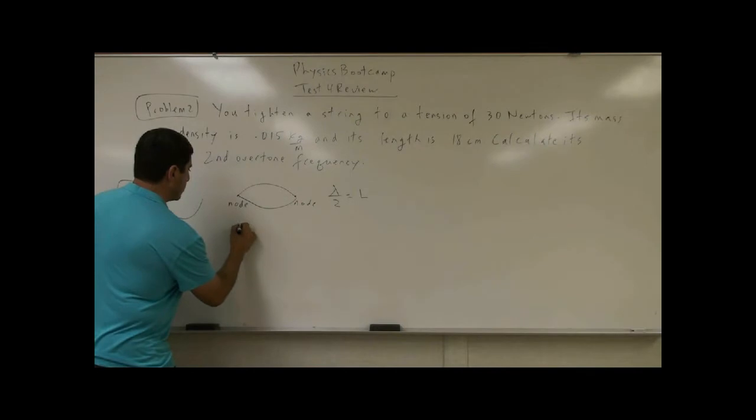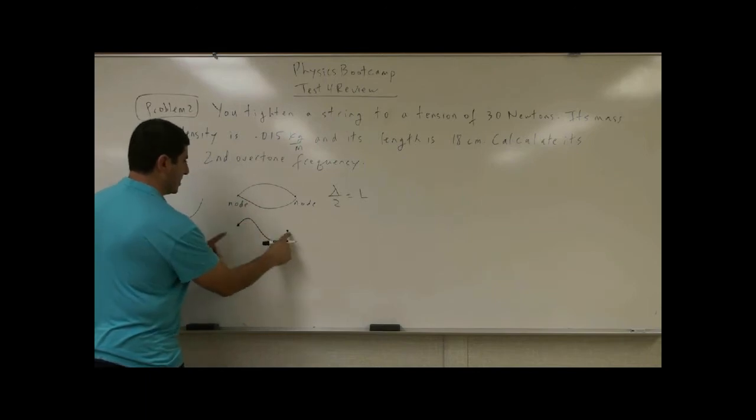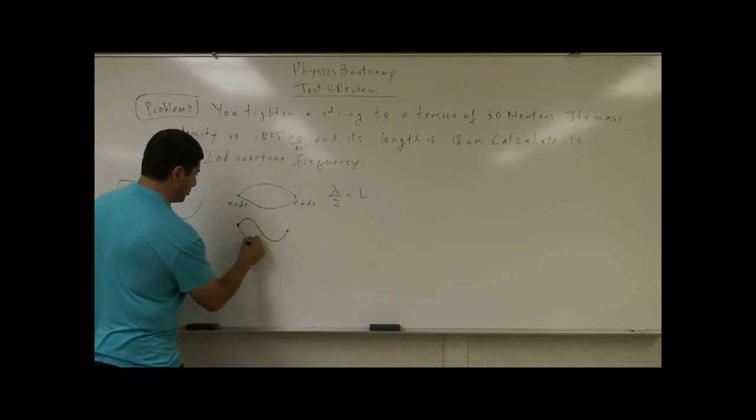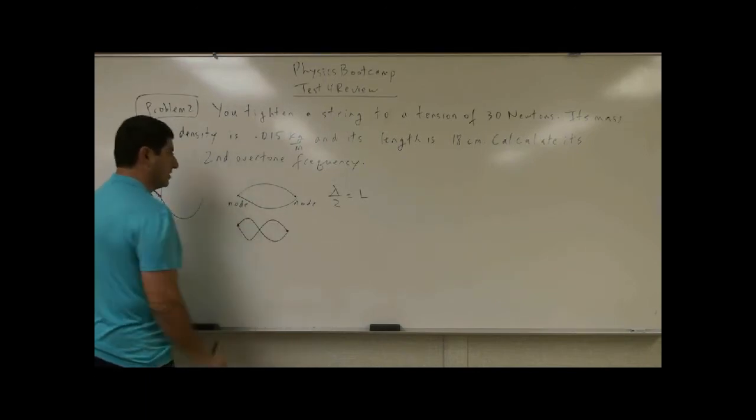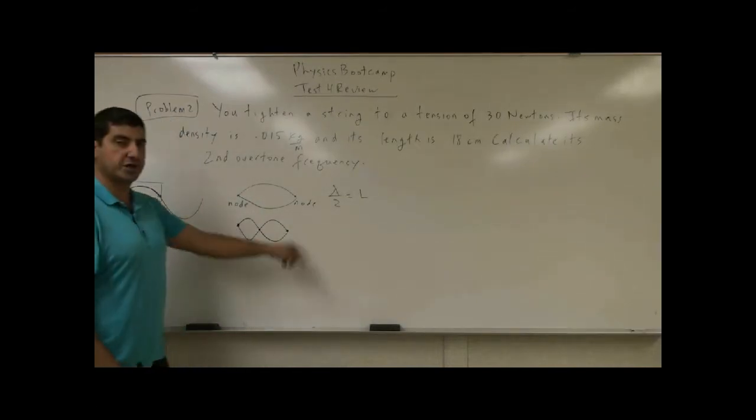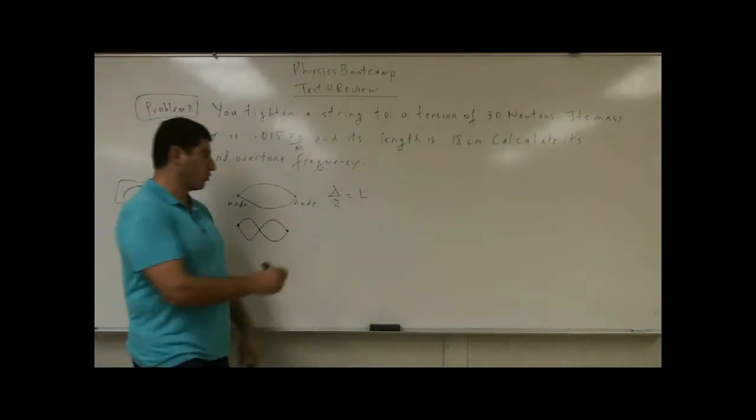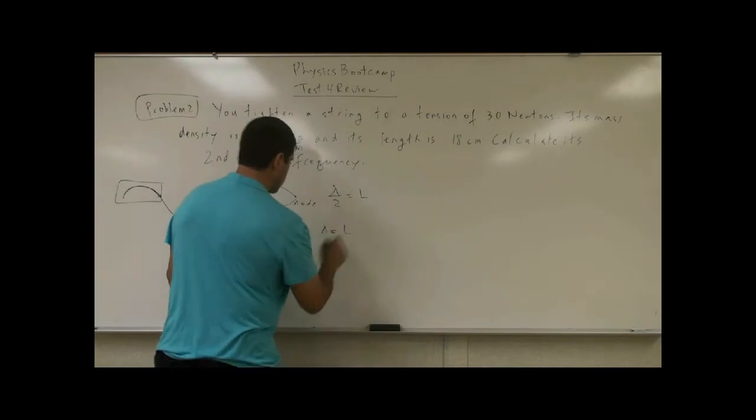Or it could be up, down, and back up. So as long as the two sides is node, or down, up, and back down. So as long as this is node, and then you have an extra node here, what part of a wave is this? Up, down, and back up. That's a complete wave.